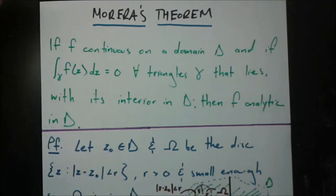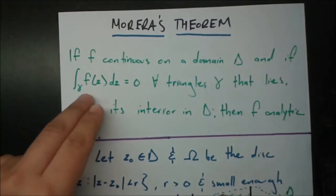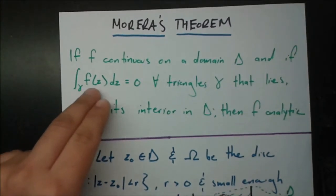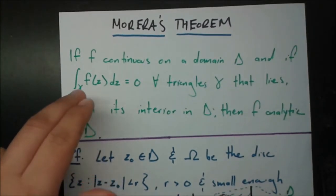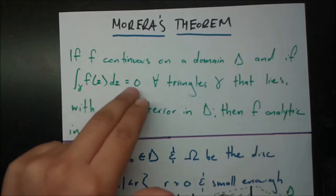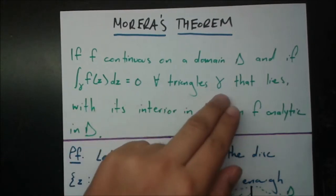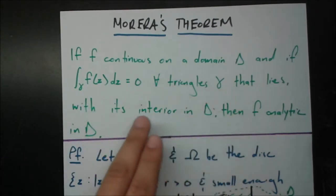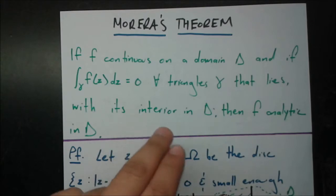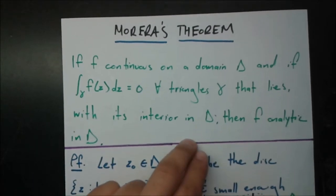Morera's theorem says that if f is continuous on a domain D, and if the integral of f(z) dz over gamma equals 0 for all triangles gamma — where gamma is any triangle that lies together with its interior inside D — then f is analytic in D.